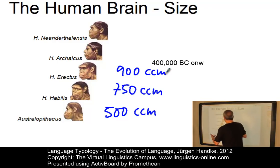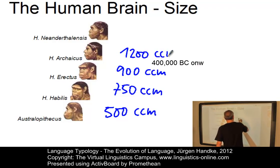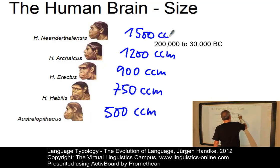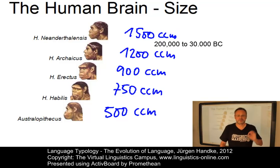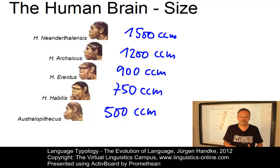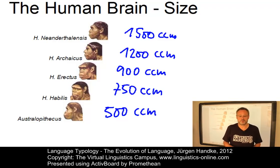Homo archaicus, the first representative of Homo sapiens, increased this once more to 1,200 cubic centimeters. And Homo neanderthalensis had an even larger brain, with 1,500 cubic centimeters. However, brain size alone is not the key factor. The brain of Homo neanderthalensis was even larger than ours — yet, you all might know what happened.